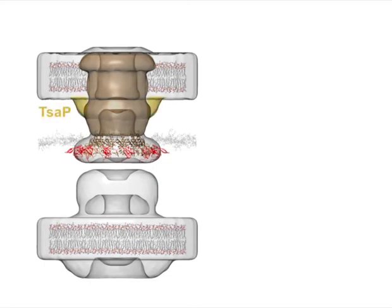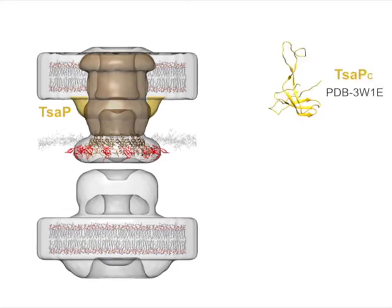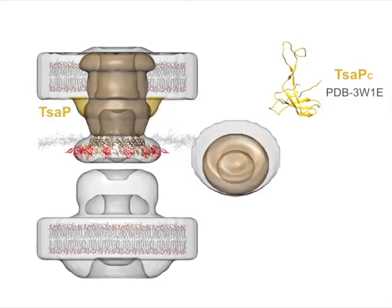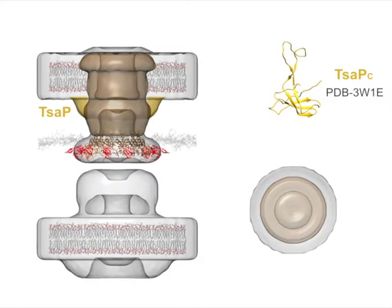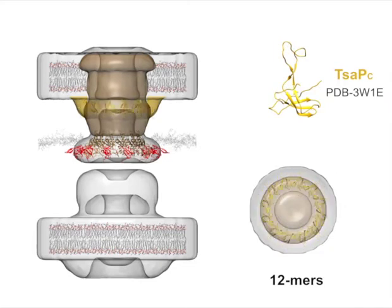Next, we analyzed TSAP, which has an N-terminal domain that binds peptidoglycan and a C-terminal domain connected by a flexible linker. Since the difference density we identified for TSAP is far from the peptidoglycan, we propose that it represents the C-terminus. We generated a homology model of the TSAP C-terminal domain and again used SIMDOC to generate 50 possible candidate rings, ending with the best fit.